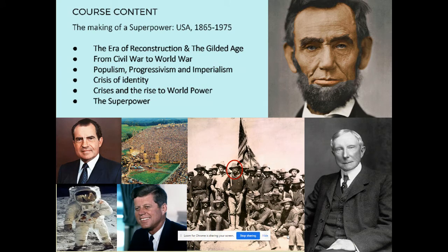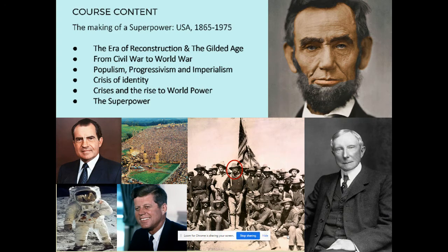Populism, progressivism, and imperialism are all parts of American foreign policy and part of the political psyche, and the idea of progressive ideas versus conservative ideas. We look at America's crisis and the rise to world power — the identity crisis that America went through in the 1860s all the way through to the 1900s in the Gilded Age, investigating how they rose to become the world power that we recognise today.